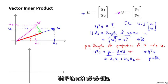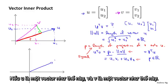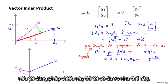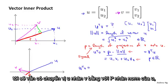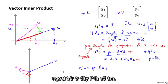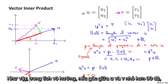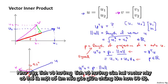One last detail: p is actually signed — it can be either positive or negative. If u is a vector pointing one direction and v is a vector such that the angle between u and v is greater than 90 degrees, then projecting v onto u gives a projection in the opposite direction. In that case, u transpose v still equals p times the norm of u, but p will be negative. So if the angle between u and v is less than 90 degrees, p is positive; if the angle is greater than 90 degrees, p is negative. The inner product between two vectors can be negative.